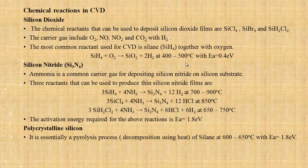Next is silicon nitride layer. Ammonia is the common carrier gas for depositing silicon nitride on silicon substrate. Three reactants can be used to produce thin silicon nitride films: SiH4 + NH3 → Si3N4 at 700-900°C, SiCl4 + NH3 → Si3N4 + HCl at 850°C, and 3SiH2Cl2 + 4NH3 → Si3N4 + 6HCl at 650-750°C. The activation energy for these reactions is approximately 1.8 eV.